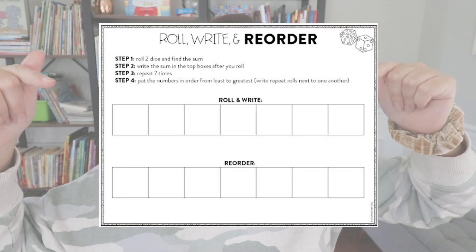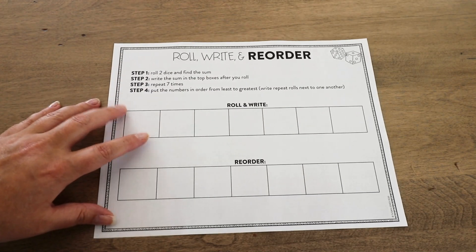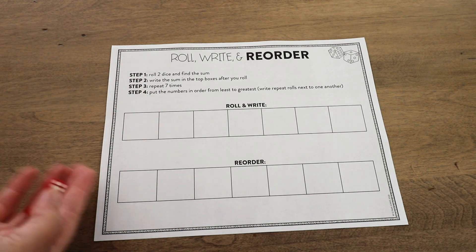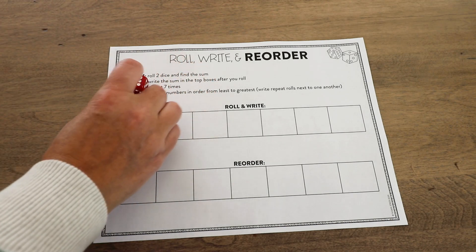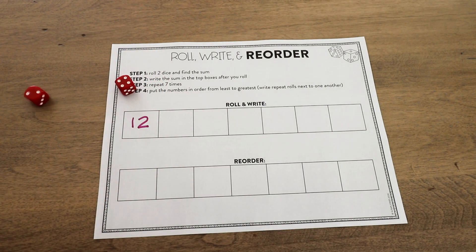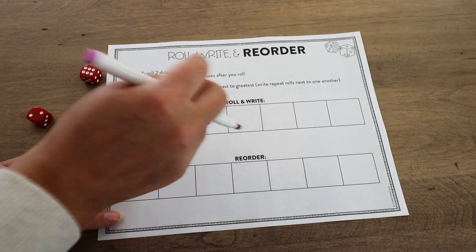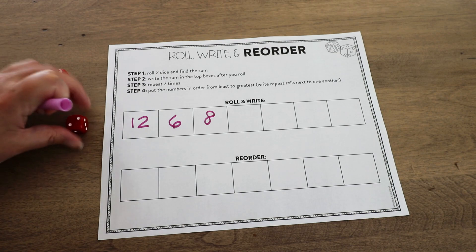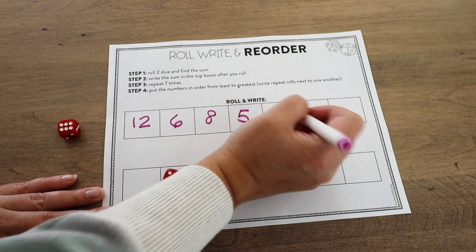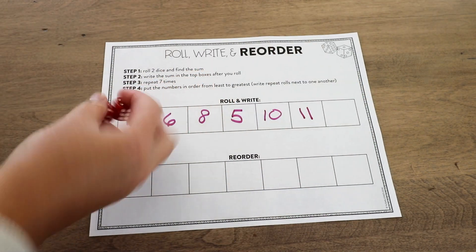Here's an example of the board using two dice — it looks like this, and the directions are very simple. The directions are basically the title of the game, which makes it nice and simple. Step one: you roll two dice and find the sum. Students will count that up and write the sum in the top row — for example, 12, then 6, then 8. They will do that until they fill up the whole top row. Students can totally play this by themselves, which I like especially during social distancing time.